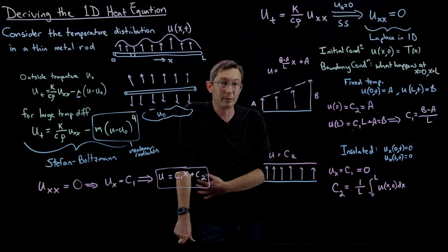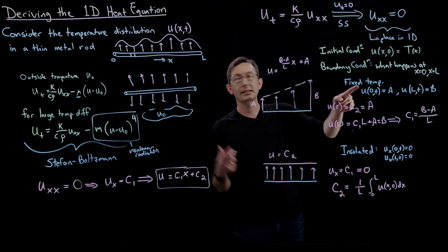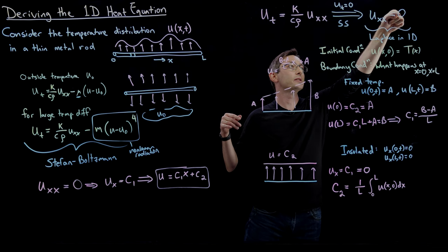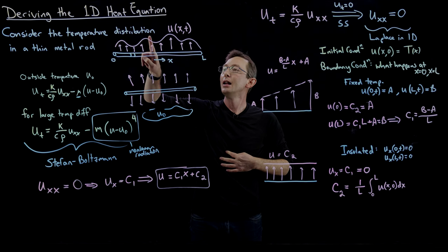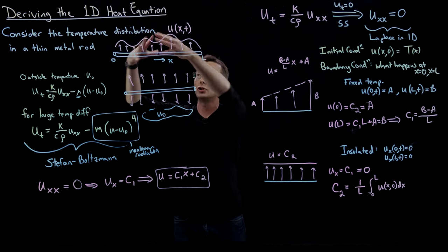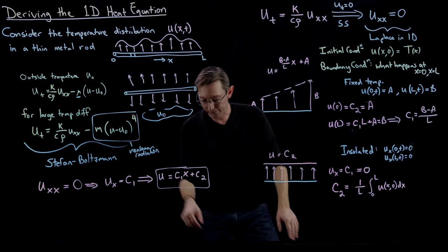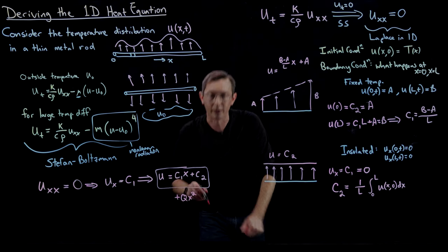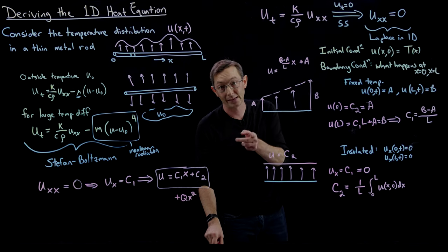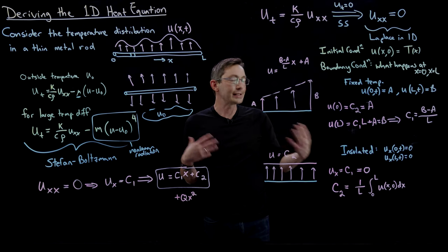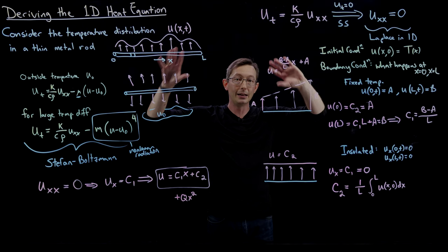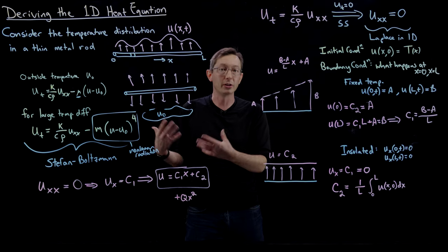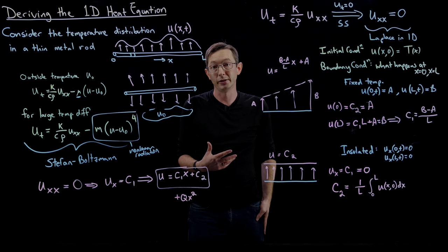As a homework problem, try solving for mixed boundary conditions — fixed temperature on the left and insulated on the right. Also try adding a steady-state forcing: u_xx = Q. Integrating twice gives a parabolic profile with a Q x² term — you get parabolic rather than linear profiles. In the next lecture, I'll derive the heat equation in 2D, 3D, and N dimensions, showing how Gauss's theorem and vector calculus let you derive really powerful partial differential equations.